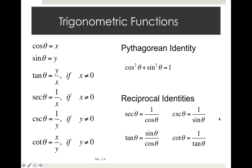Trigonometric functions. Cosine of theta equals x, sine of theta equals y. Therefore, tangent equals sine divided by cosine, secant equals 1 over cosine, cosecant equals 1 over sine, cotangent equals cosine over sine. Pythagorean identity: cosine squared theta plus sine squared theta equals 1. And reciprocal identities: secant equals 1 over cosine, tangent equals sine over cosine, cosecant equals 1 over sine, and cotangent equals 1 over tangent.